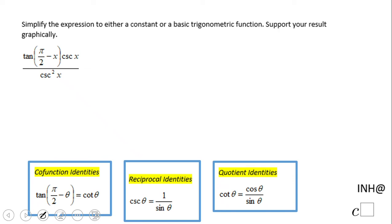Welcome back to C Square. In this example we will simplify a trigonometric expression to either a constant or a basic trigonometric function. We have three identities that I'm going to use.